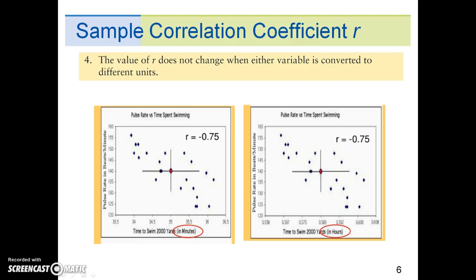Going back to our pulse rate versus time spent swimming example, the graph on the left is using minutes and the graph on the right is using hours. The units do not matter because the calculated correlation coefficient is the same.